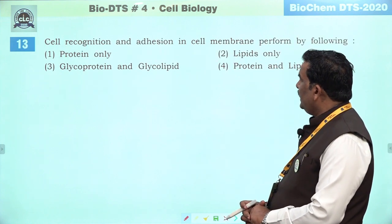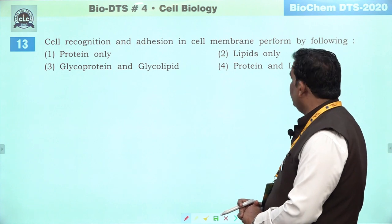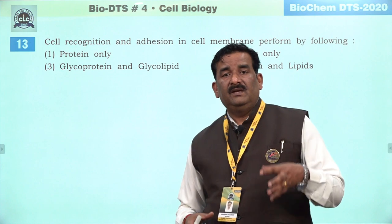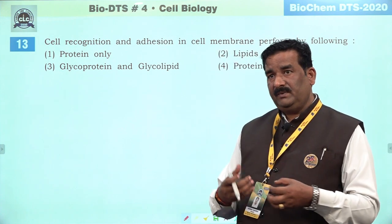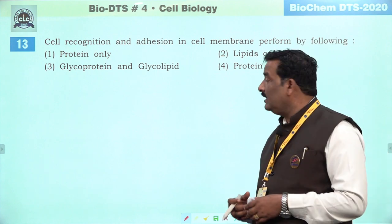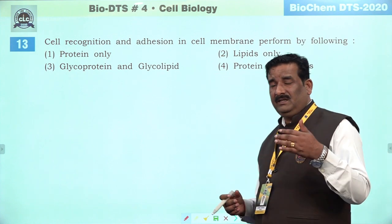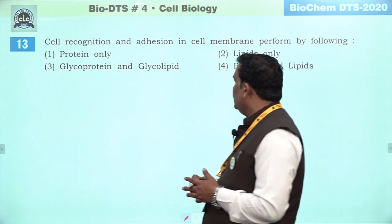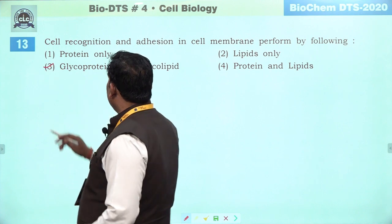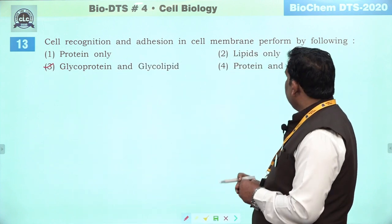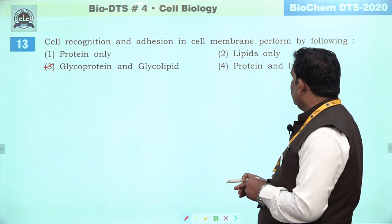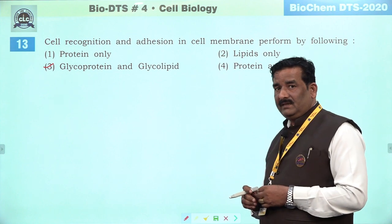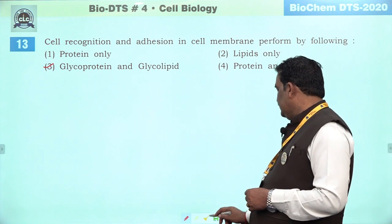Next question: cell recognition and adhesion in the cell membrane performed by the following. Antigen-antibody interaction — khaas taur se antigen ka membrane ki outer surface par interaction hona, medicine ka ya doosari cheezon ka — woh sara kaam membrane par yeh glycoprotein or glycolipid ke zariye hota hai. Isliye iska right answer third hai. Sirf protein aisa kaam nahi karti, sirf lipid kaam nahi karti — balki conjugated protein aur conjugated lipid yeh tarikay ka work karti hai. Third is the right answer.